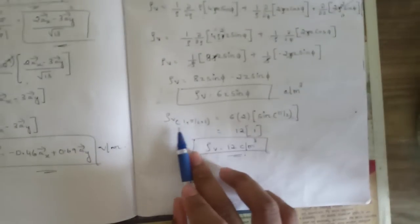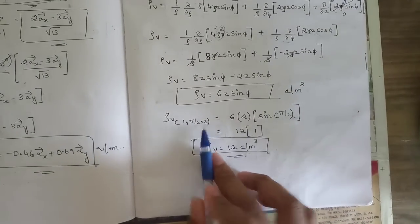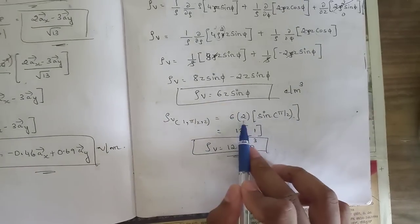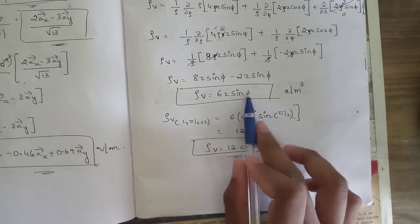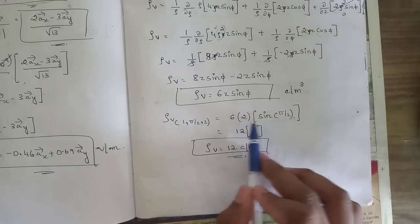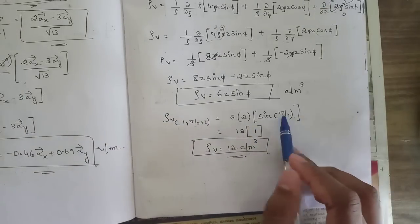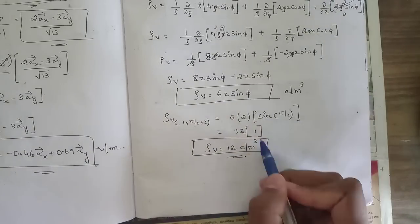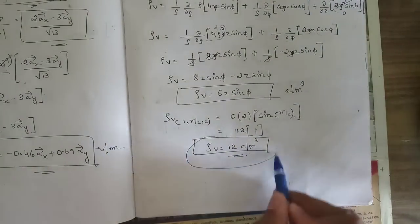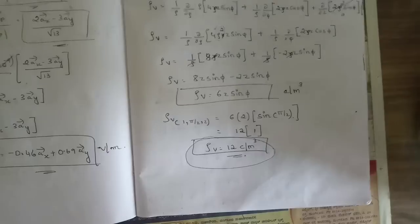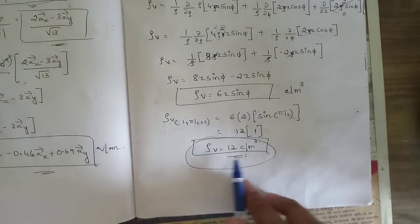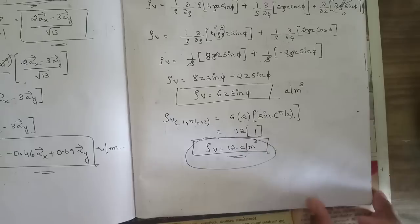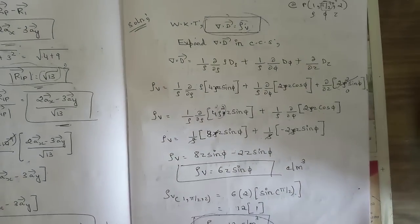Substituting the point P = (1, π/2, 2): z = 2, φ = π/2. So ρv = 6 × 2 × sin(π/2) = 12 × sin(90°) = 12 × 1 = 12 coulombs per meter cubed. That is the final answer for the first sub-question.